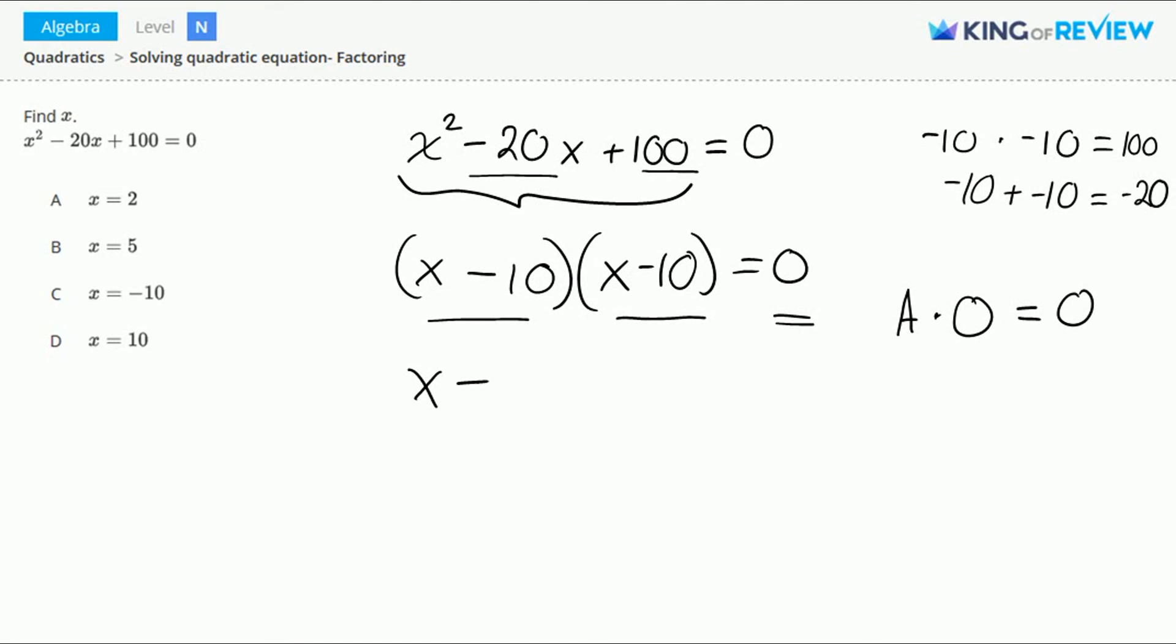So let's set x minus 10 equal to 0 and solve for x. This gives us x equals 10. Letter D is correct.